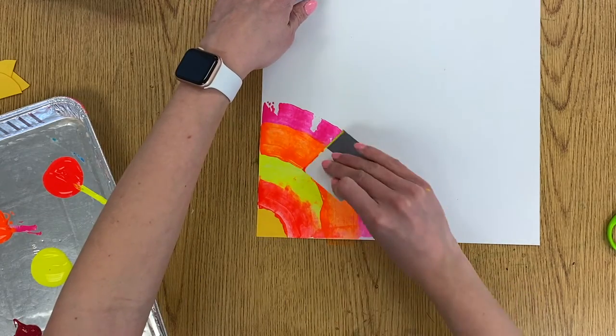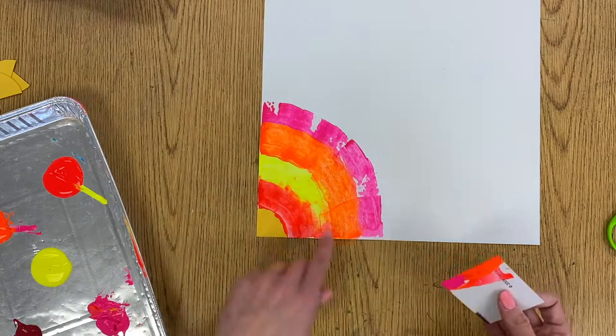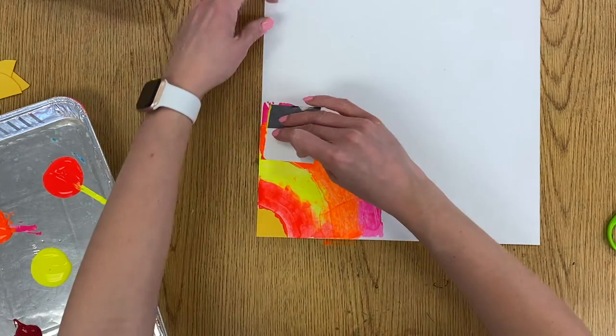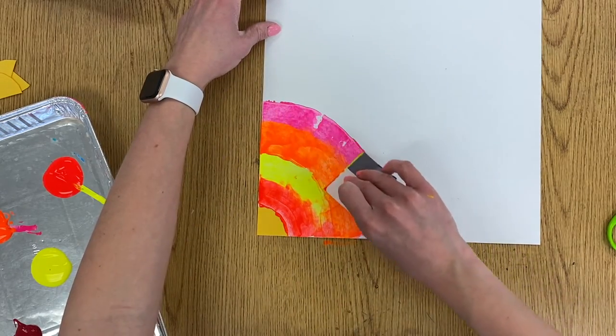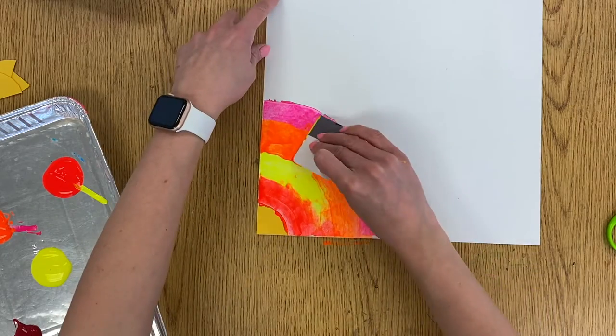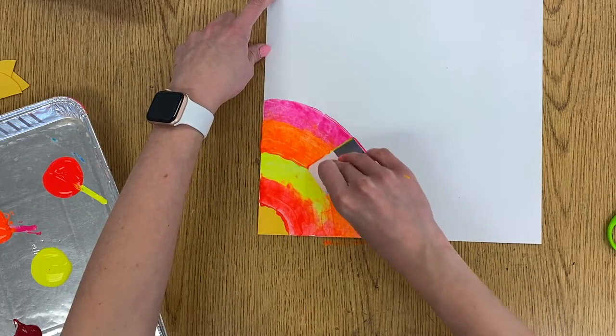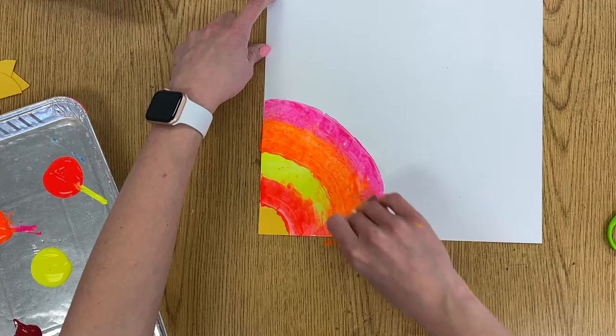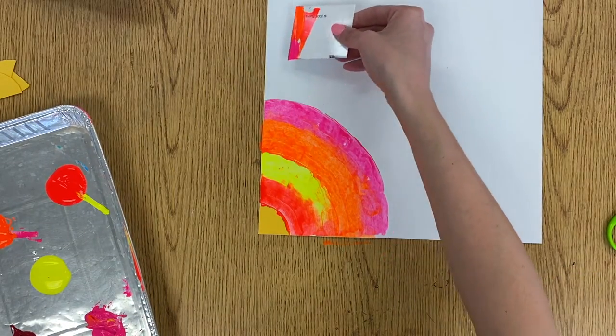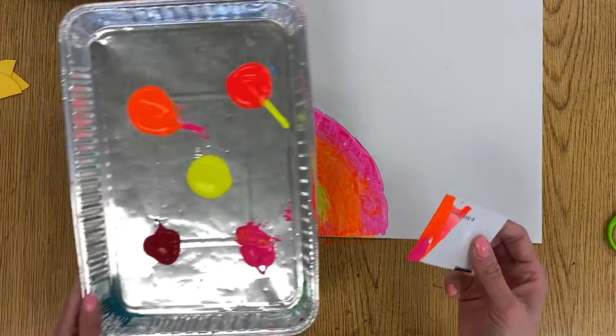Remember, this is our background, so your stripes do not have to be perfect. Like I said, if you have some white spots in there like I do, it's okay, but you could go over it with your piece of cardboard and just kind of smooth them out if you want. I'm going to keep going until I get to the very top.